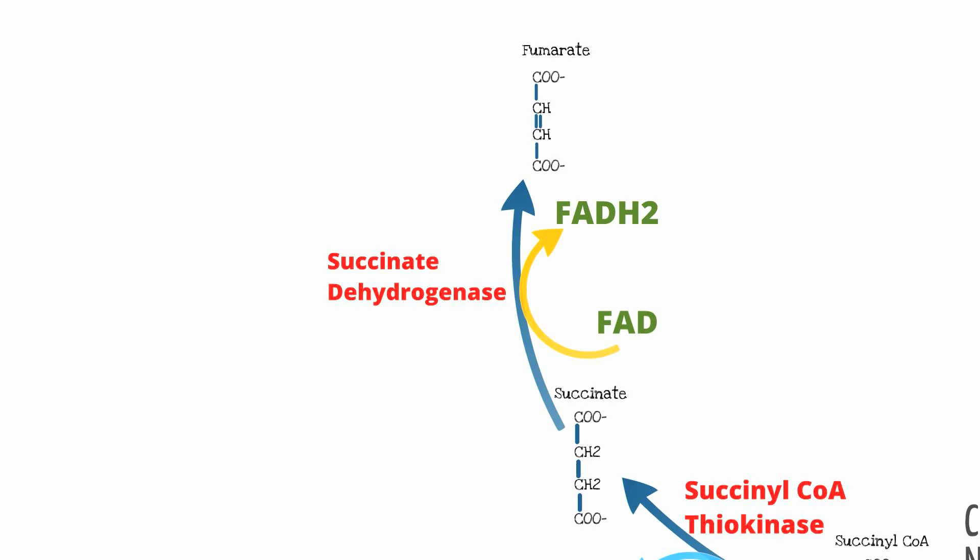It is important to note that succinate dehydrogenase is the only TCA cycle enzyme that is not in the mitochondrial matrix, and is the only enzyme in the cycle that participates in both the TCA cycle and the electron transport chain. Succinate dehydrogenase is located on the inner mitochondrial membrane. In the electron transport chain, succinate dehydrogenase is part of complex II.